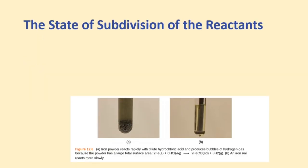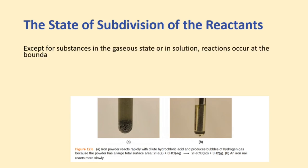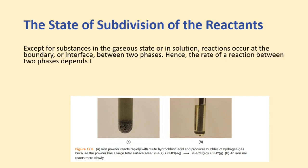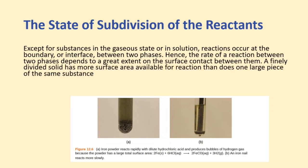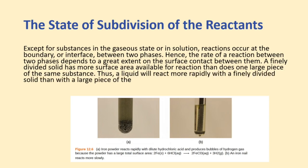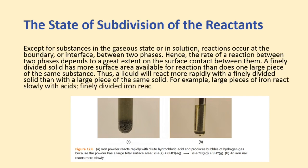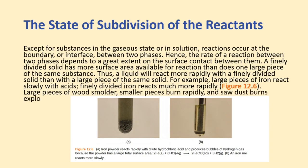The state of subdivision of the reactants: Except for substances in the gaseous state and in solution, reactions occur at the boundary, or interface, between two phases. Hence, the rate of a reaction between two phases depends to a great extent on the surface contact between them. A finely divided solid has more surface area available for reaction than does one large piece of the same substance. Thus, a liquid will react more rapidly with a finely divided solid than with a large piece of the same solid. For example, large pieces of iron react slowly with acids, while finely divided iron reacts much more rapidly.